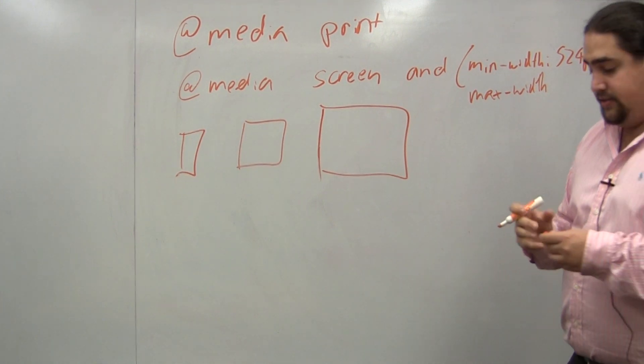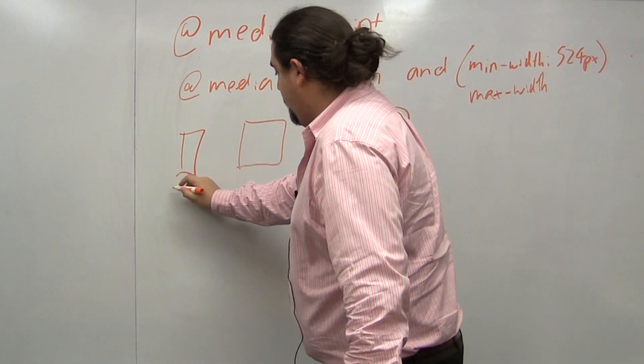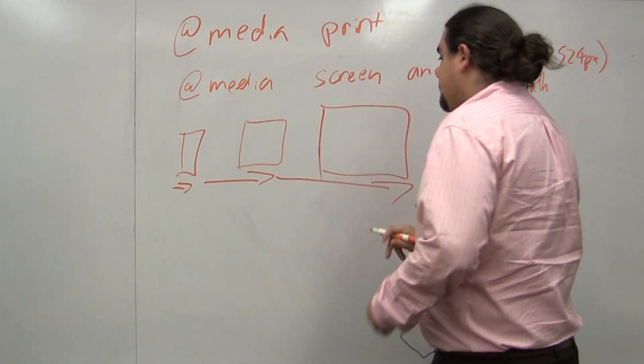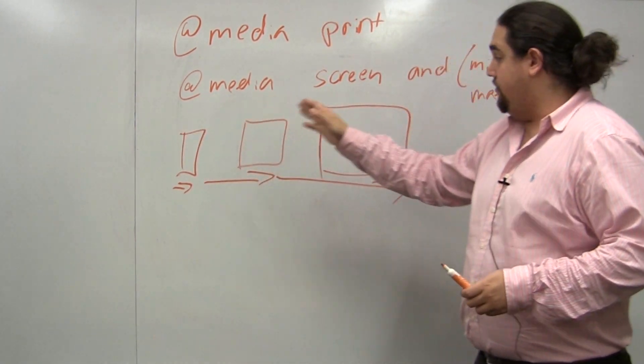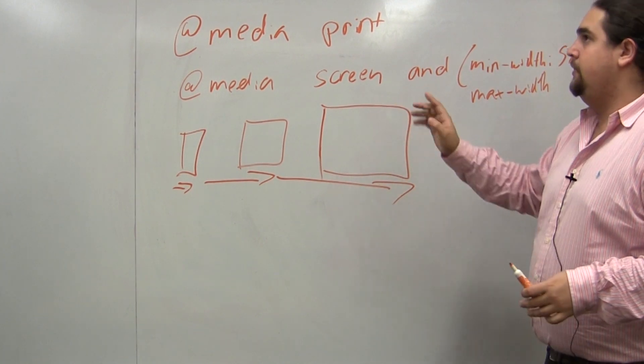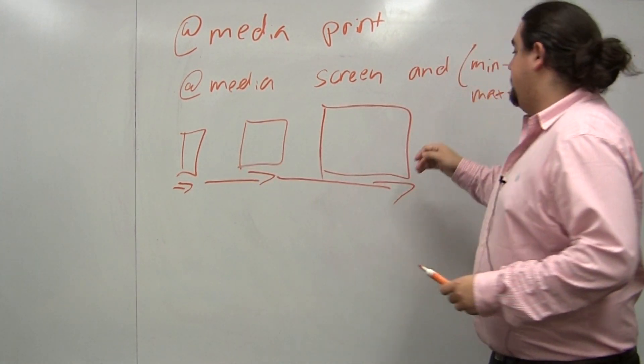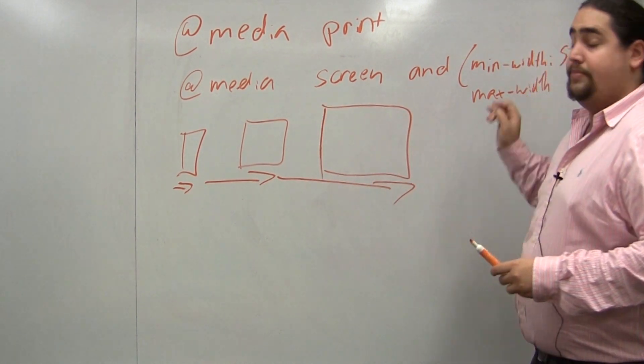Now what max-width does is, instead of going from here to there to there, start, is it smaller than this, is it smaller than this, is it smaller than, or sorry, is our screen larger than this using min-width, is our screen smaller than this using max-width.